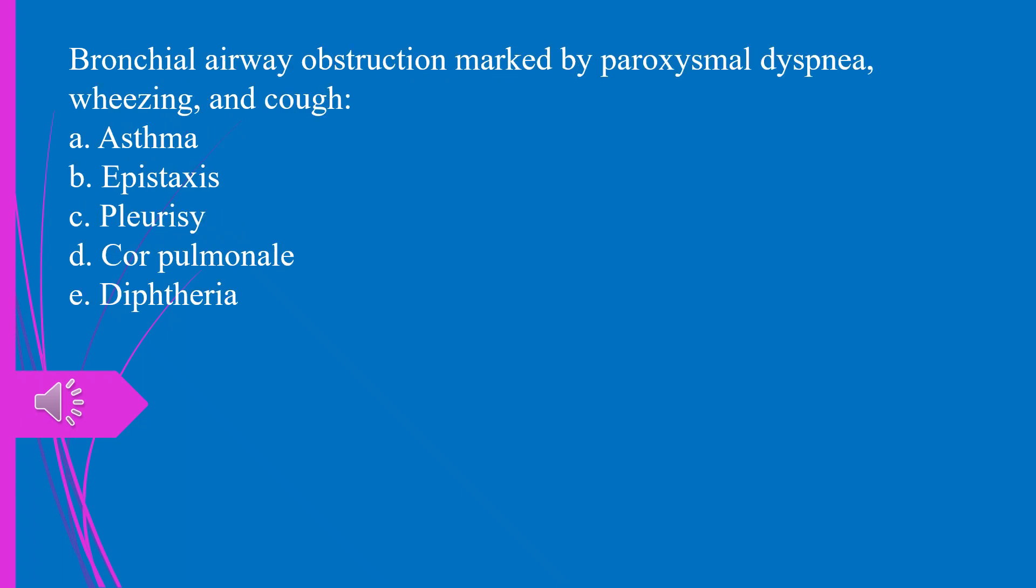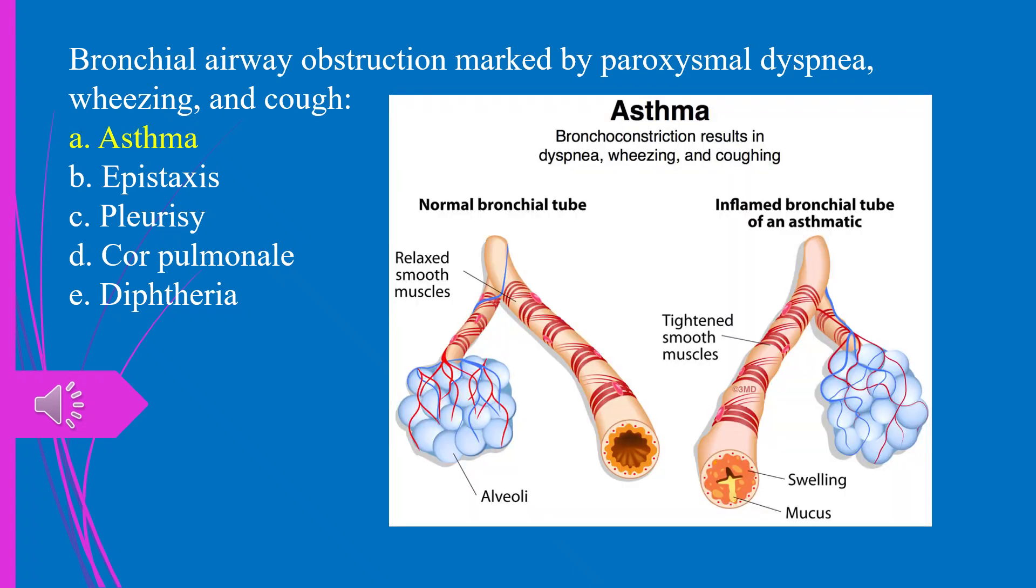Bronchial airway obstruction marked by paroxysmal dyspnea, wheezing, and cough. A. Asthma. B. Epistaxis. C. Pleurisy. D. Cor pulmonale. E. Diphtheria. The answer is A. Asthma.